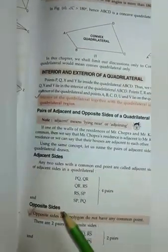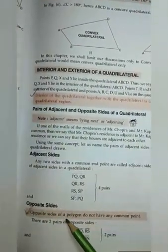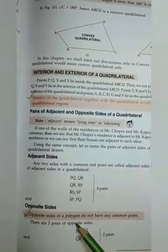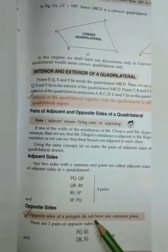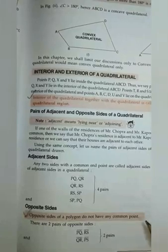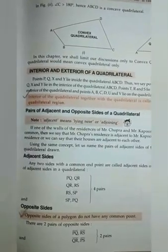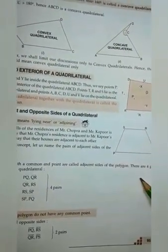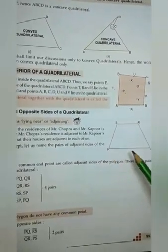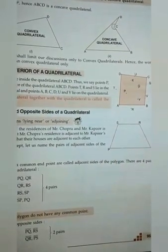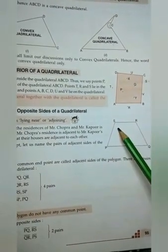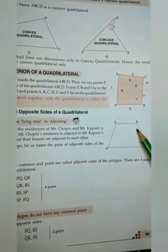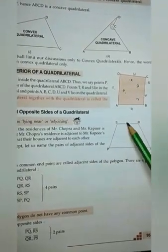Opposite sides of a polygon do not have any common point. For example, the side opposite to PQ is RS, and the side opposite to QR is SP.